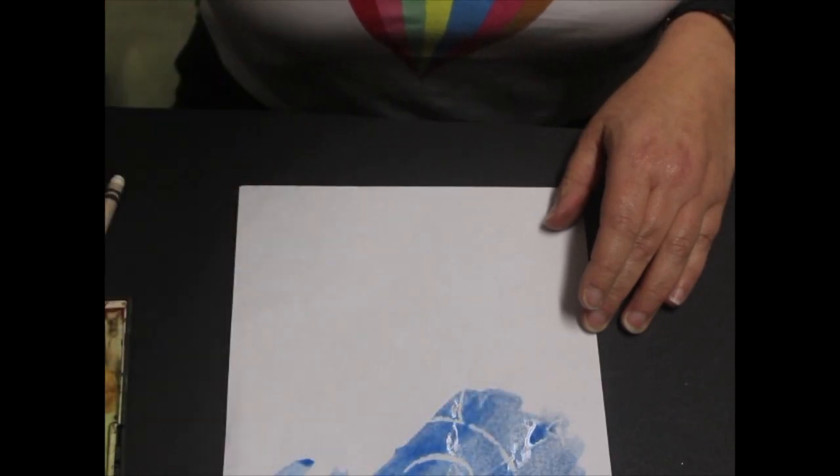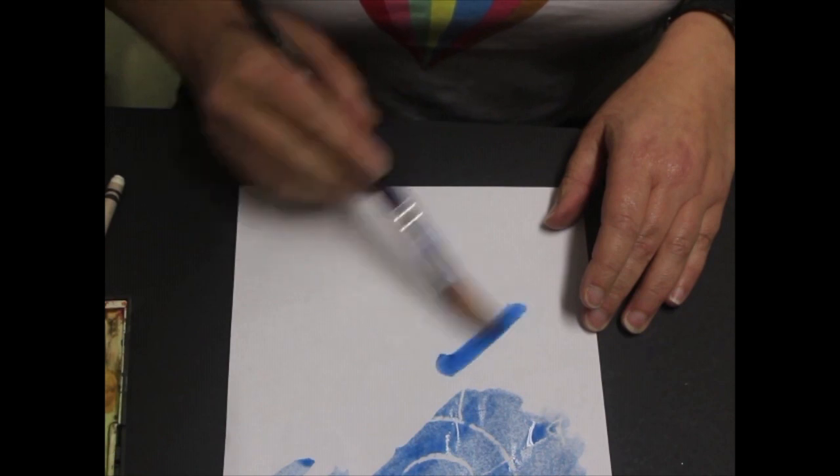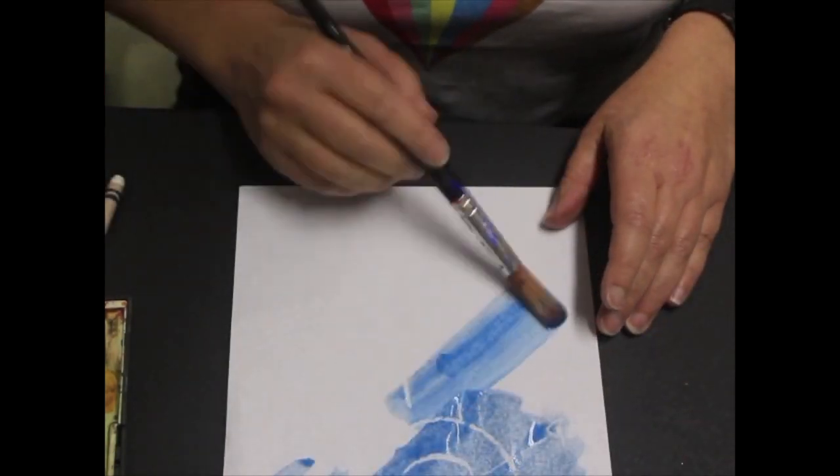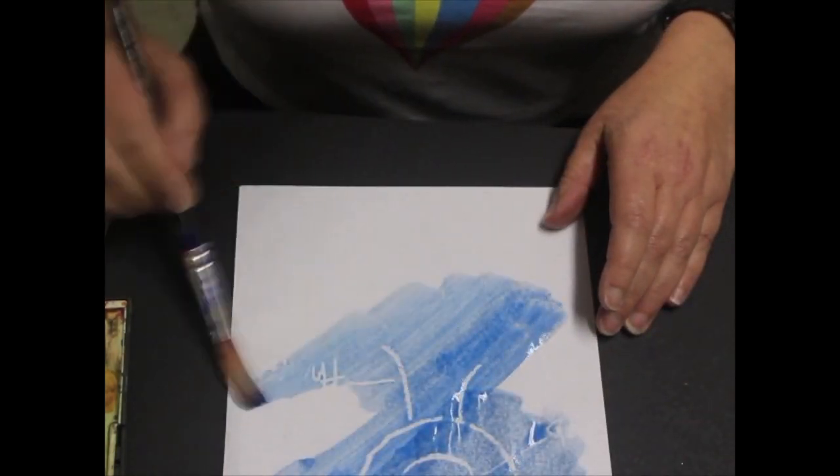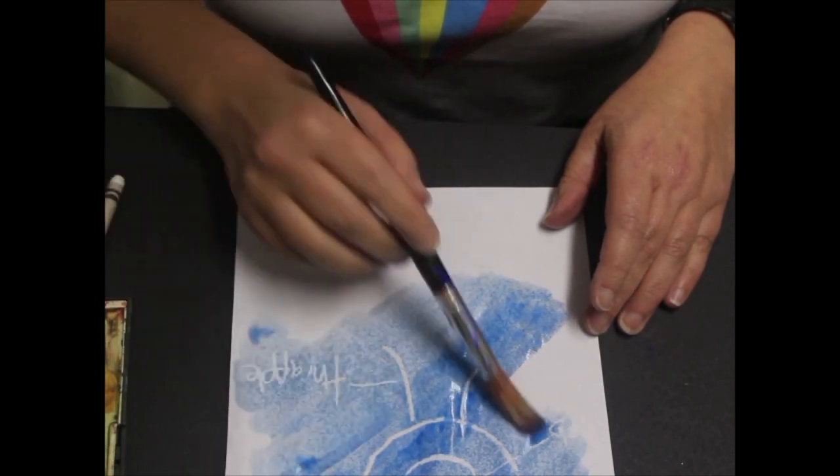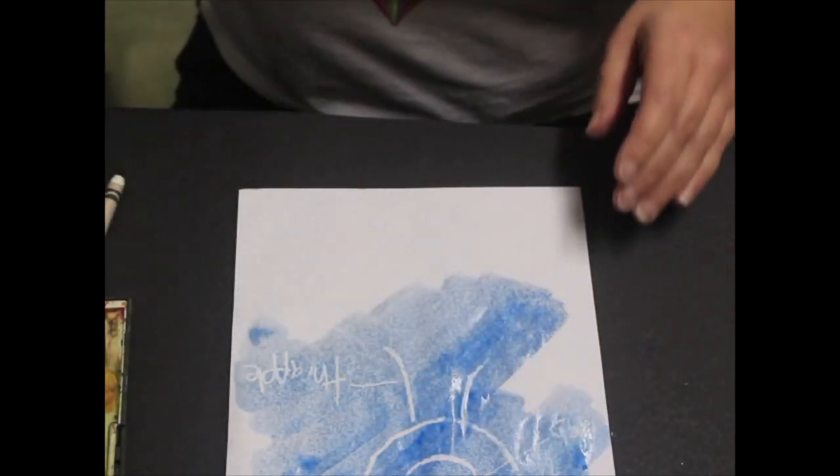And there we have our lugs and of course being water-based paint, it shrinks away from the waxed areas and there we have it.